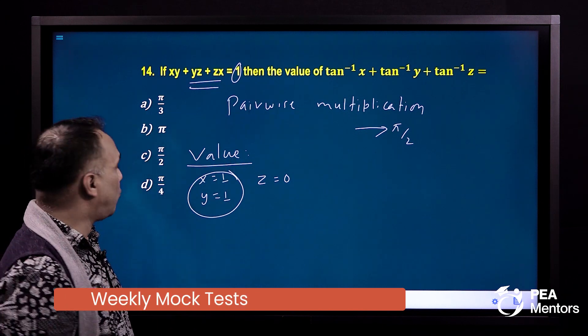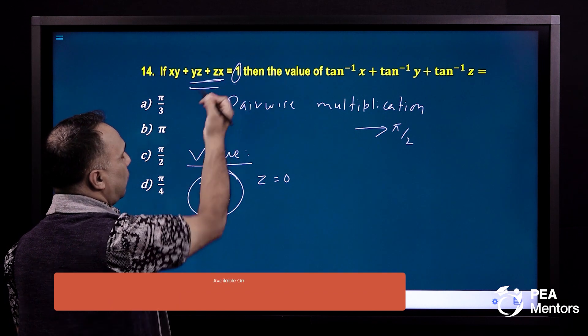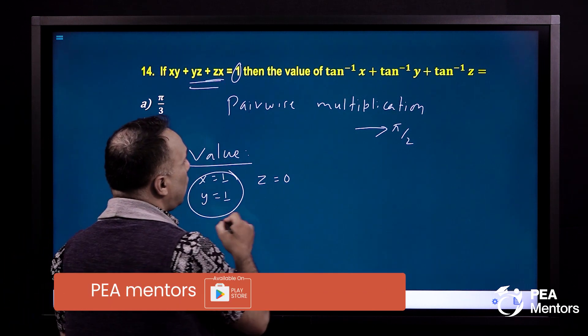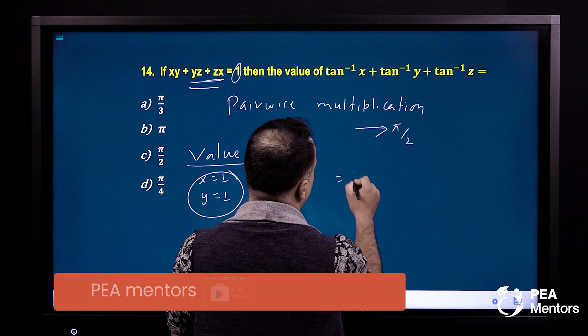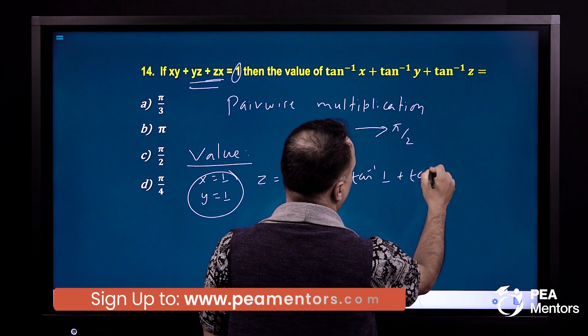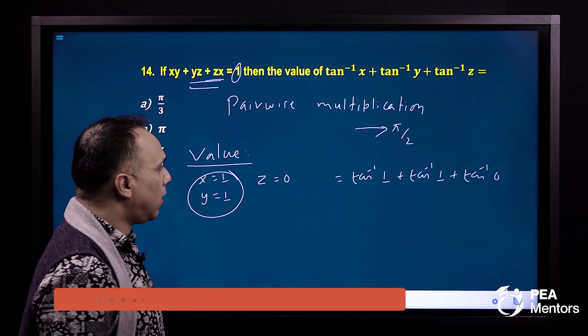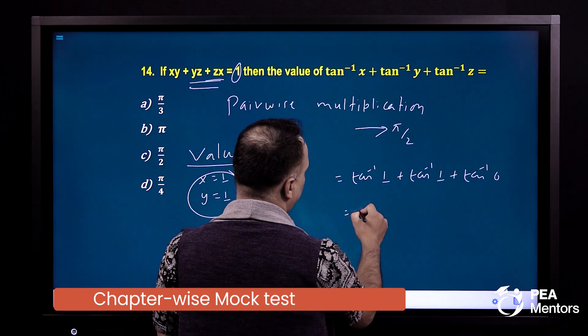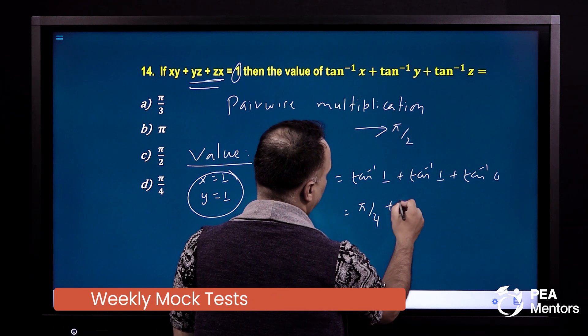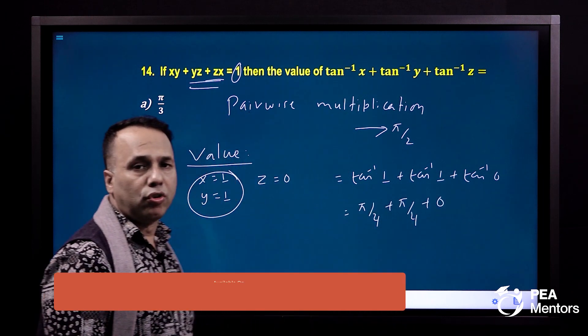You can see the pattern. x is 1, y is 1, z is 0. Now, if you do this, you will see: tan inverse 1, tan inverse 1, tan inverse 0. How do you do this? When you do this, pi by 4, pi by 4.